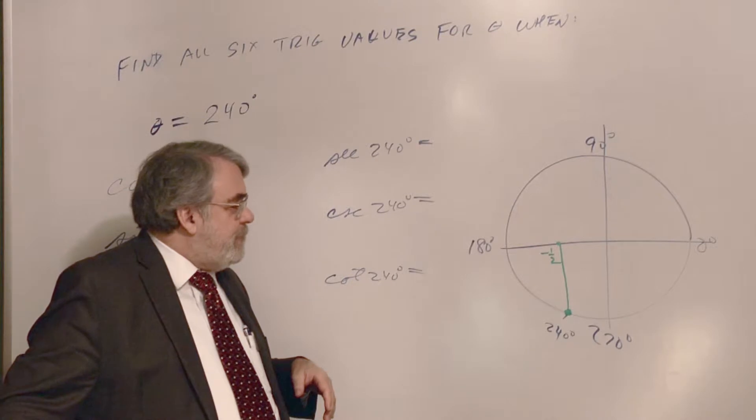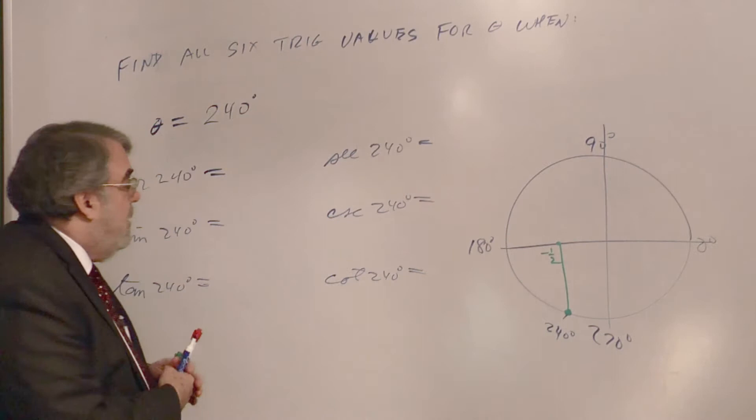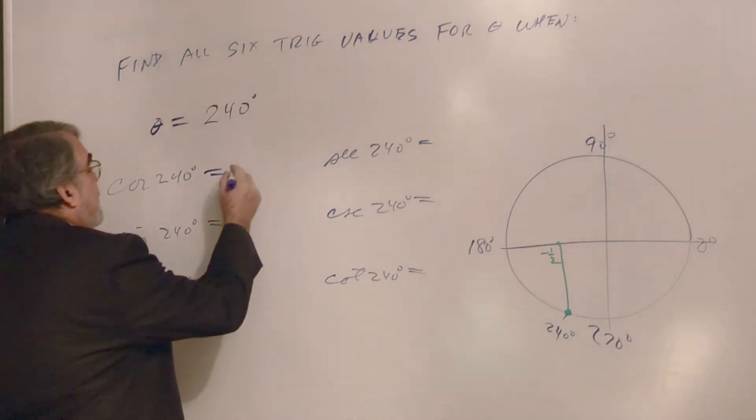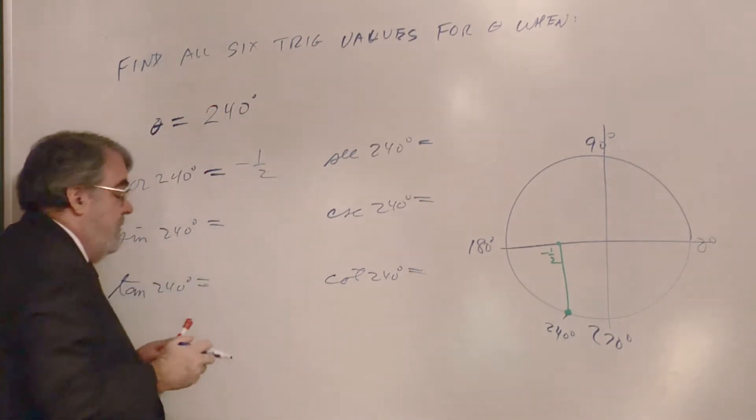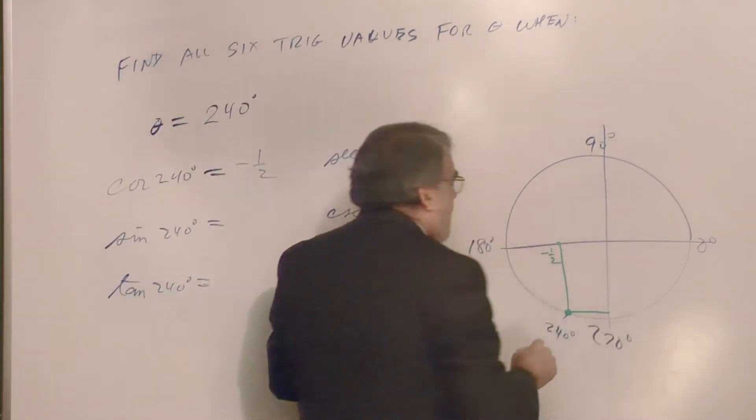And of course there are going to be negatives in here. And this is going to be a negative one-half. Alright, so cosine 240 is minus one-half. How about sine? Sine 240. Ah, now look at that y value. It's negative, but it's also pretty large.